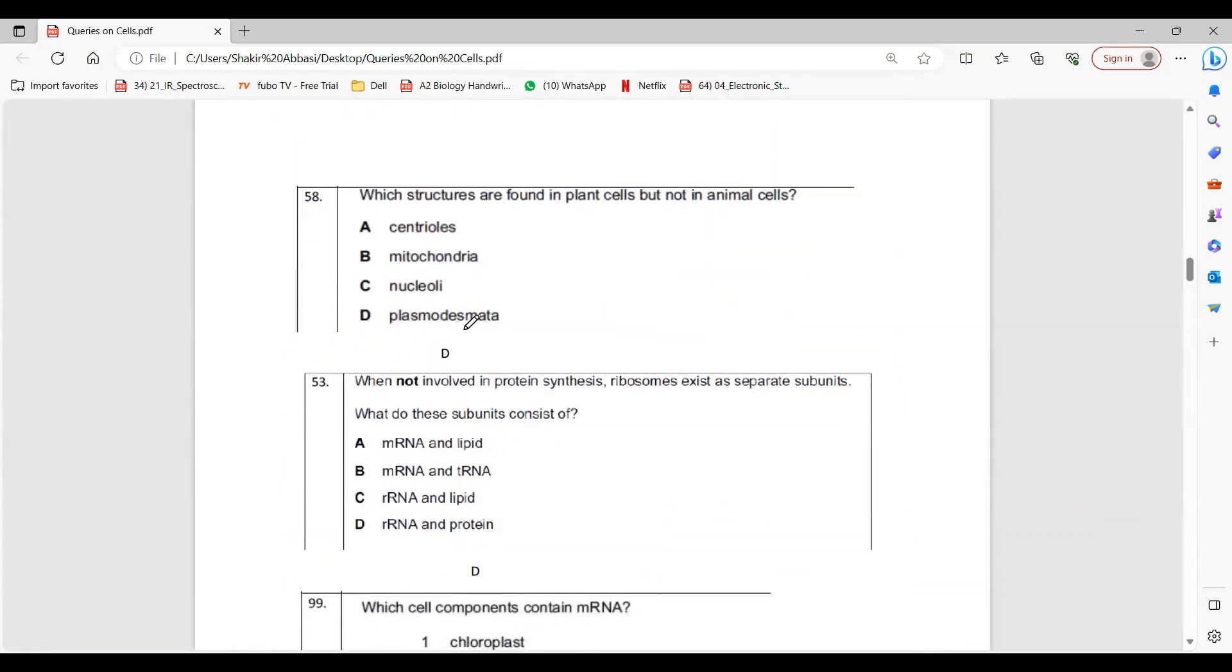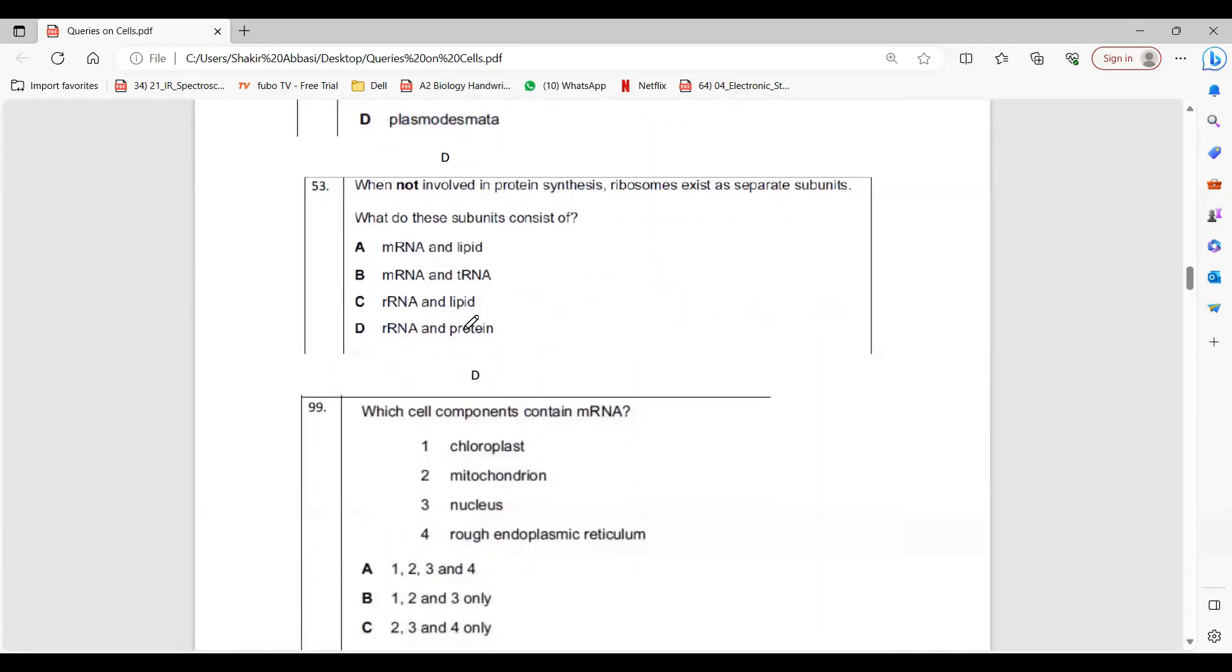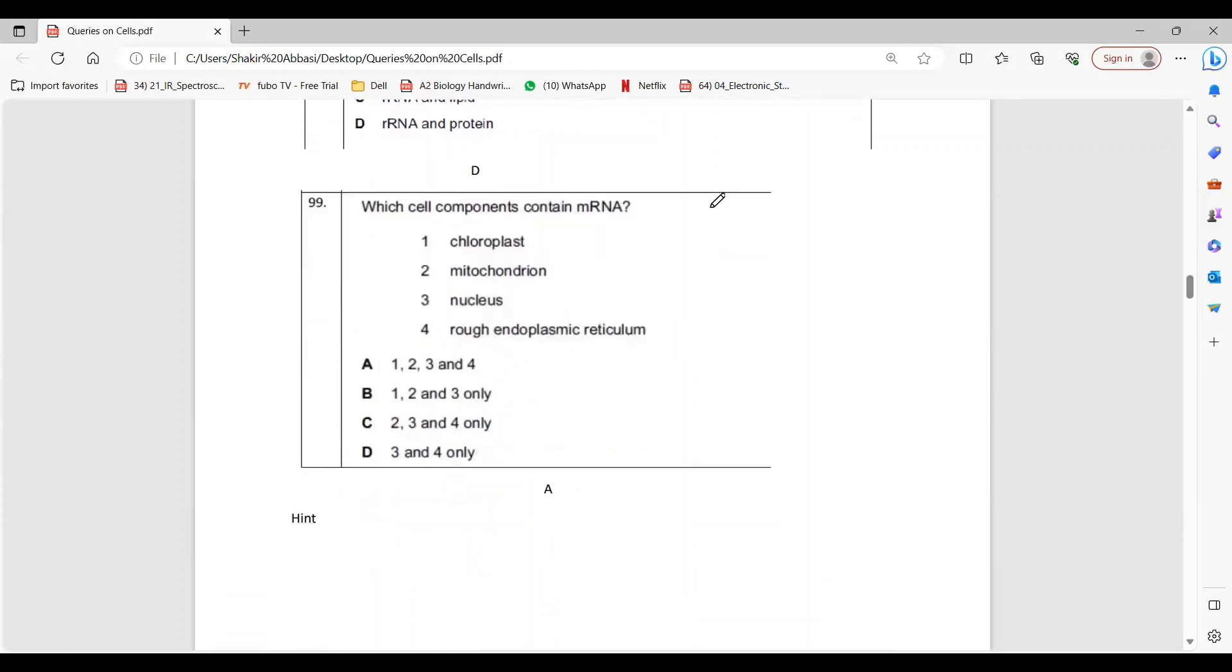Here, chloroplast is obviously found in plants, not in animals. They're not involved in protein synthesis. Ribosome has separate subunits, right? So what are they made from? Each subunit is made from rRNA and proteins.